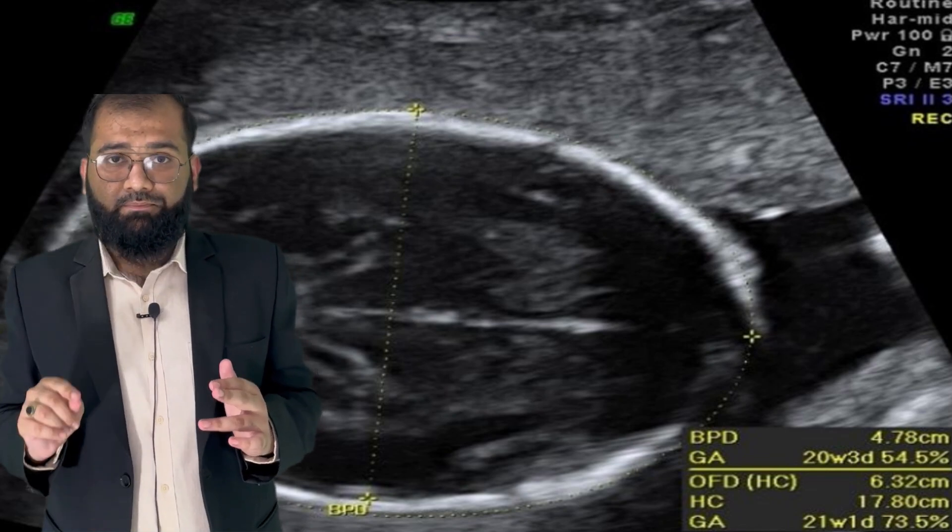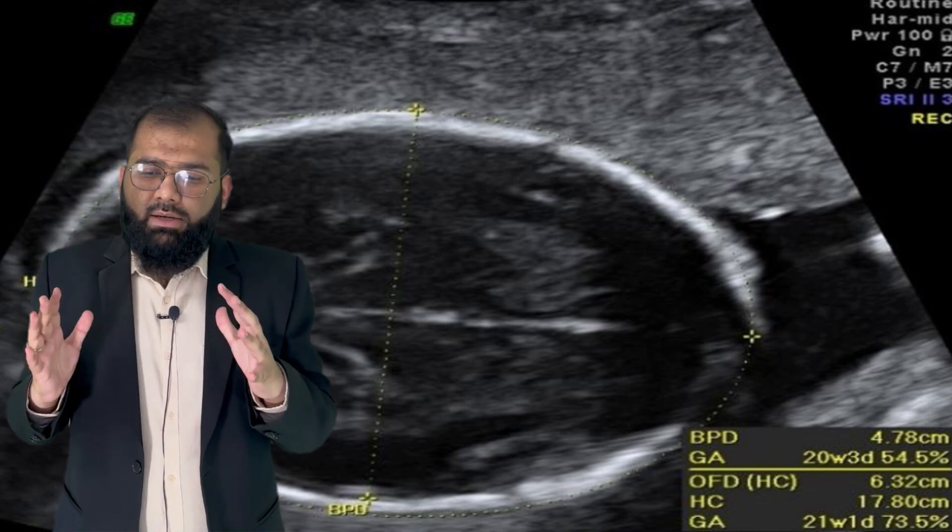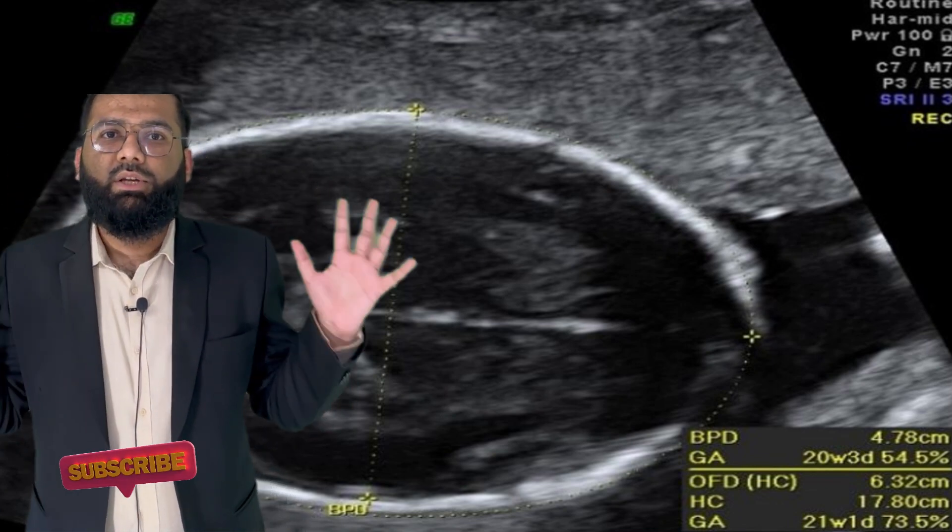So it's from outer to inner. But when you take head circumference, you take it in the same section circumferentially from outer to outer, not outer to inner.